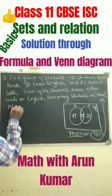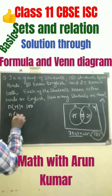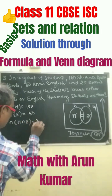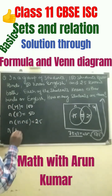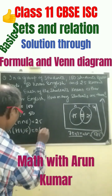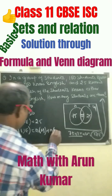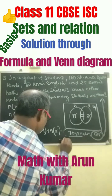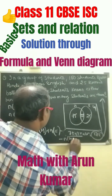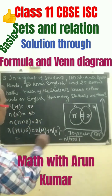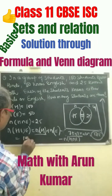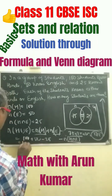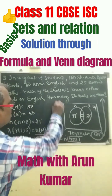Now let us go with the numerical value. We know that N of H equals 100, N of E equals 50, and N of H intersection E equals 25. So N of H union E equals N of H plus N of E minus N of H intersection E, which is 100 plus 50 minus 25, equals 125. This is the same answer.